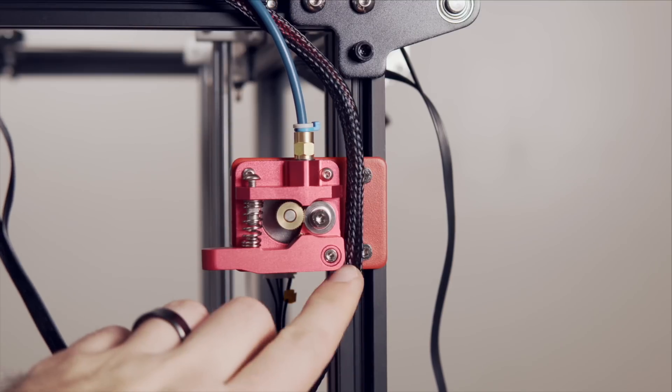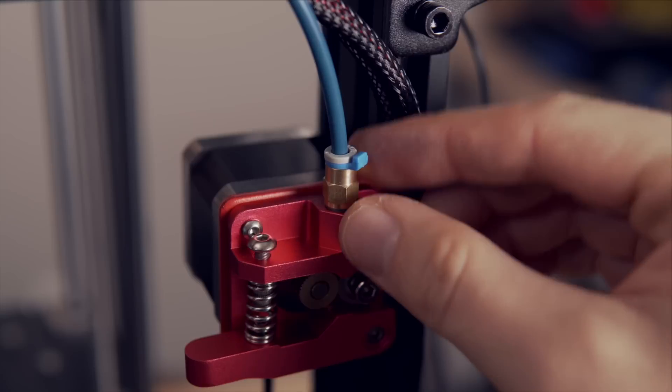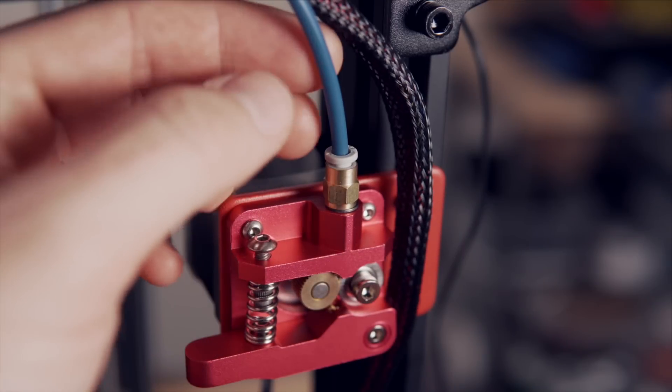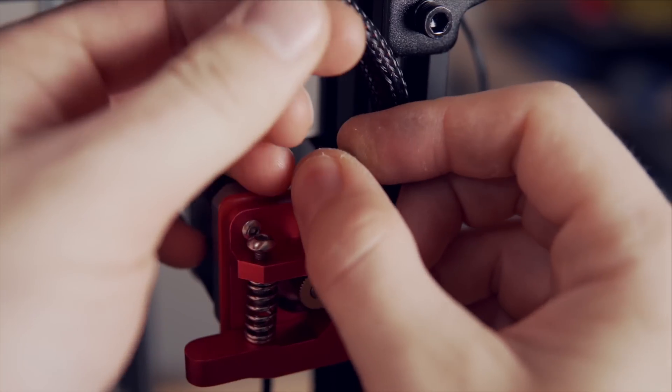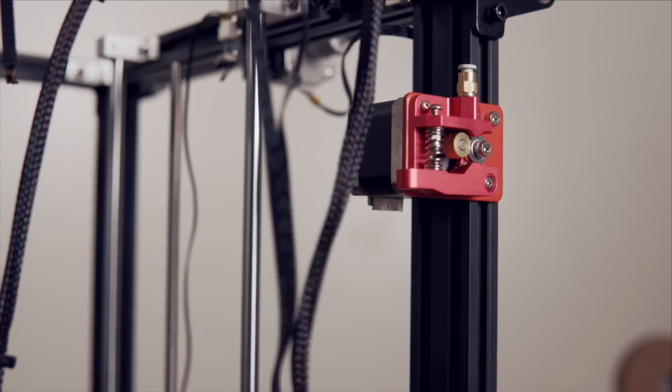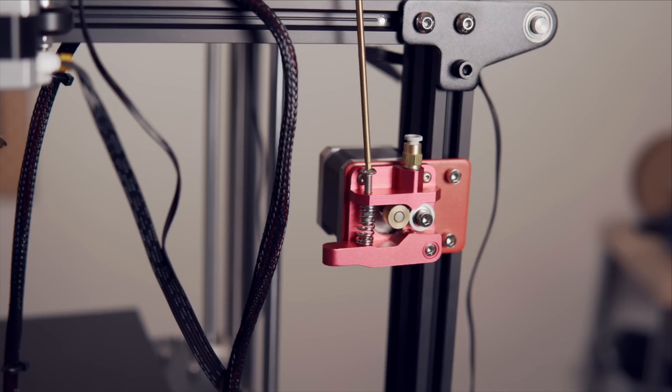Now we can turn our attention to the extruder. Just like on the hotend, we'll start by removing the retention clip with our finger or a flathead, and then press down on the compression fitting so that we can pull the bowden tube out. Next, unplug the extruder cable, just leave that off to the side for now, and we are ready to remove all of the screws from this extruder.